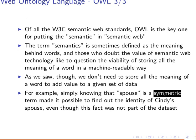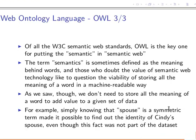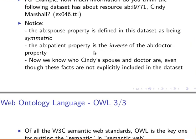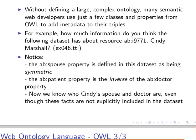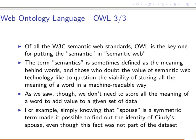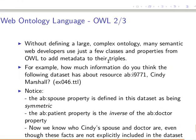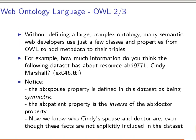We don't need to store all the meaning of a word to add value to a given dataset, because we can infer it automatically. For example, the word 'spouse' — when we declare it's symmetric — made it possible for us to find out the identity of Cindy's spouse, even though this fact was not actually part of the dataset. Likewise, when we learned about doctor and patient as inverses of one another. Thank you very much for watching; I hope this opens a door to understanding the idea behind the semantic web and automatic reasoning.